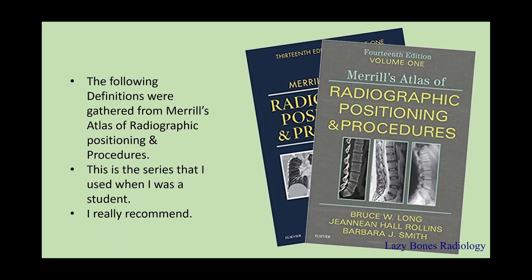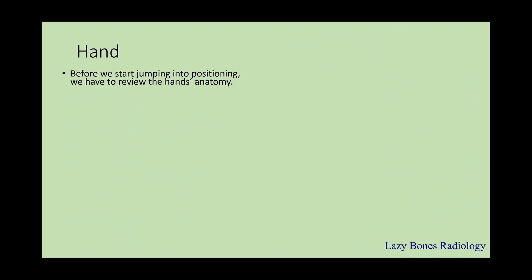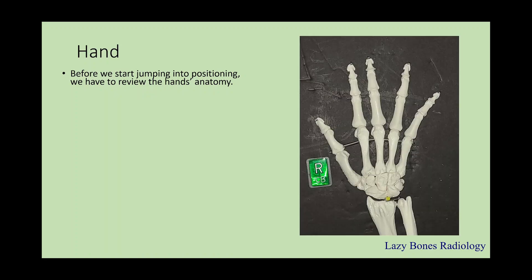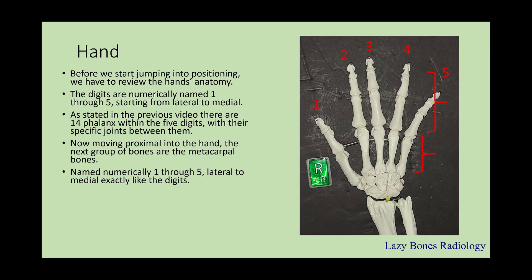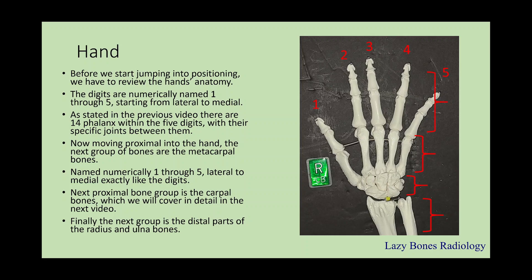The following definitions were gathered from Merrill's Atlas of Radiographic Positioning Procedures — a series I used when I was a student, so I highly recommend it. The hand: before we jump into the positioning, we first have to review the anatomy of the hand, as you can see here on my model. The digits are numerically named 1 through 5 starting from lateral to medial. There are 14 phalanges within the 5 digits, with their specific joints between them. Moving proximal into the hand, the next group of bones are known as the metacarpal bones, named numerically 1 through 5 from lateral to medial. The next group is the carpal bones, which we'll cover in detail when we cover the wrists. And lastly, the distal part of the radius and ulnar bones.